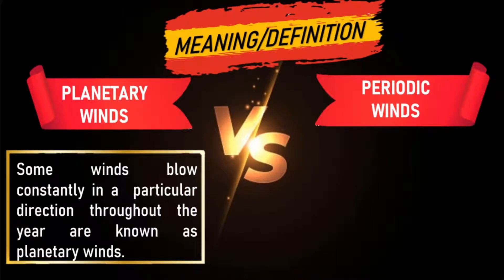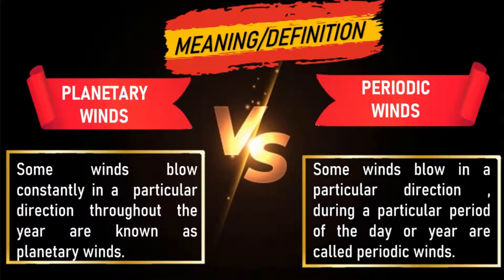Some winds that blow constantly in a particular direction throughout the year are known as planetary winds. Some winds that blow in a particular direction during a particular period of the day or year are called periodic winds.